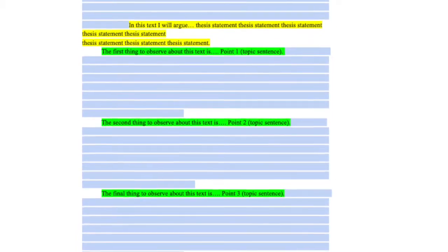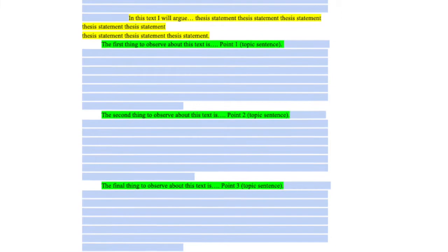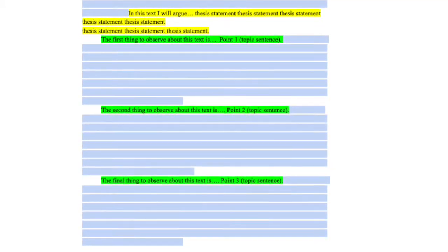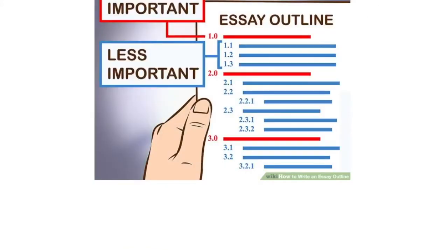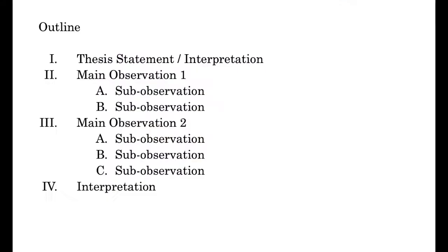Topic sentences are kind of like the same thing as thesis statements. A thesis statement is just a topic sentence for the entire essay. Think about topic sentences and thesis statements as the same thing, or a family resemblance. Think about your outlining as essentially a preliminary map for what you're trying to do in your essay as a whole. You're going to eventually build out each part of your outline into different paragraphs and sections — an expansion of each line of your outline into a paragraph. That will help your drafting process stay more organized.